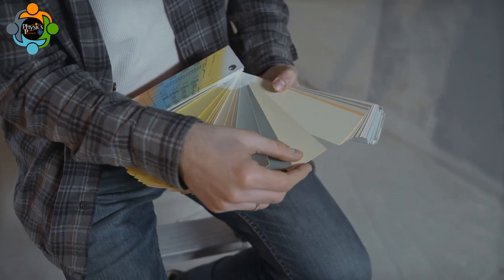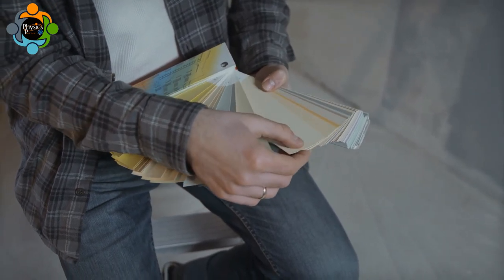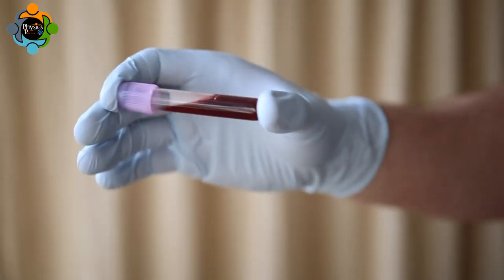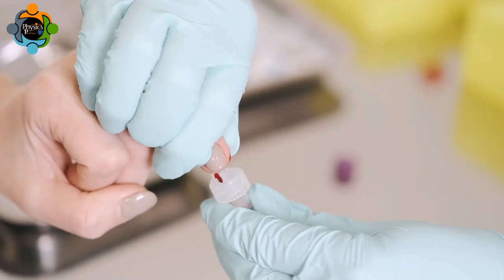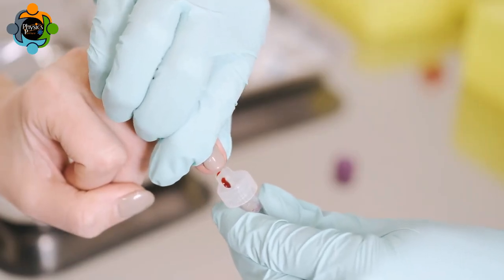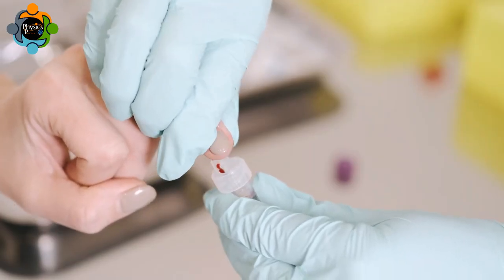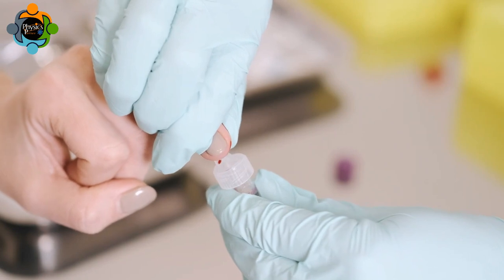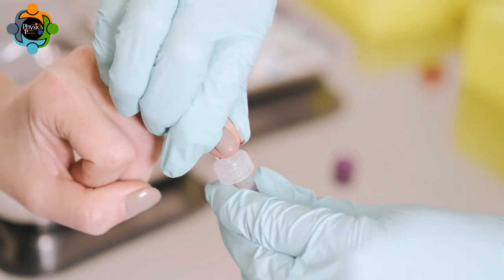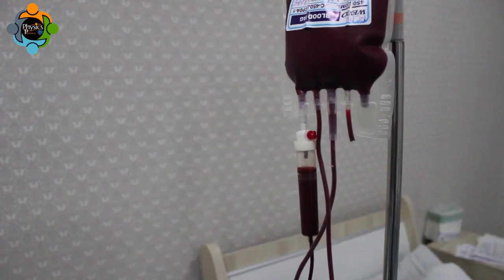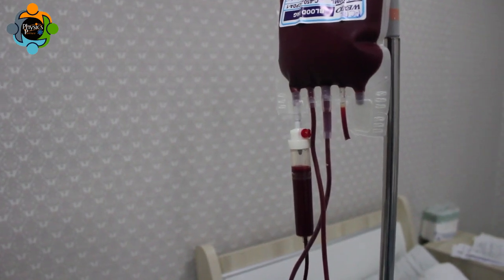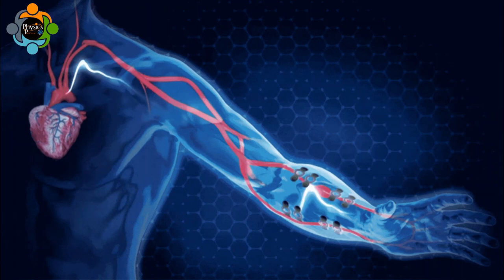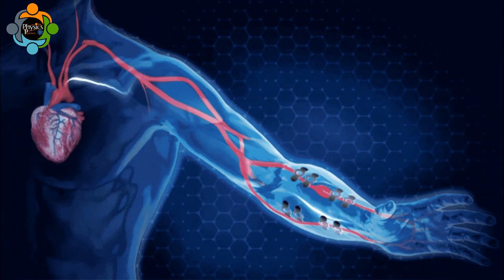Without an understanding of viscosity, the paint industry would struggle to produce high-quality products that meet customer needs. Another example comes from medical science: a blood clot forms in our body due to high viscosity of the blood, which helps prevent excessive bleeding. However, in some cases low viscosity of blood can lead to blood clots, which could potentially be fatal, so maintaining a balance of viscosity is important for our health.